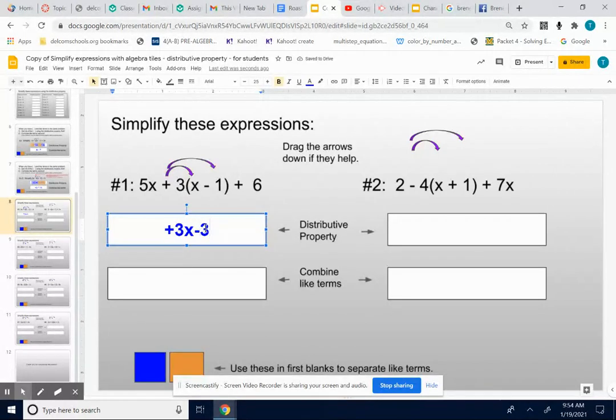A positive 3 times a negative 1 is a negative 3. That's just doing the parentheses. We have positive 3x and then a negative 3. Now I need to take the other stuff and bring it down. I've got to take that 5x and bring it down, and I've got to take that positive 6 on the end and bring it down.